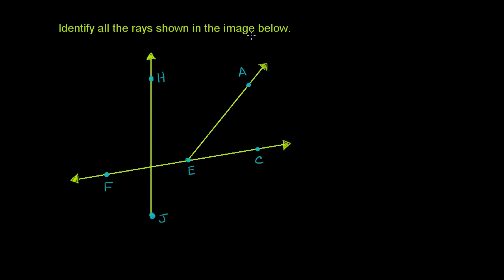Identify all the rays shown in the image below. As a reminder, a ray starts at some point and then goes on forever in some direction. In order to define a ray, you need the starting point — let's call it x — and then another point that sits on the ray, let's say y. The ray keeps going past y, so we label it ray xy.